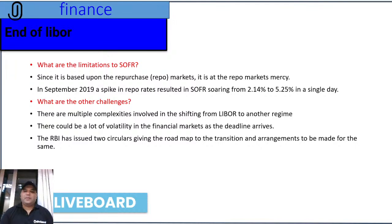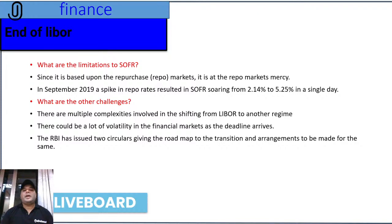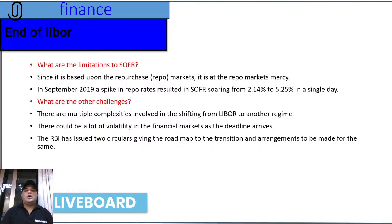There are certain limitations associated with SOFR. It is based on repurchase markets, so it is at the market's mercy — if markets plummet, SOFR will also see a downfall, leading to a drastic fall in international lending rates. Conversely, if repo rates are hiked, SOFR will also soar, as it did in September 2019 from 2.14% to 5.25% in a single day. There are also multiple complexities in shifting from LIBOR to another regime, including administrative issues, navigating paperwork, and potential volatility in financial markets as the deadline arrives.